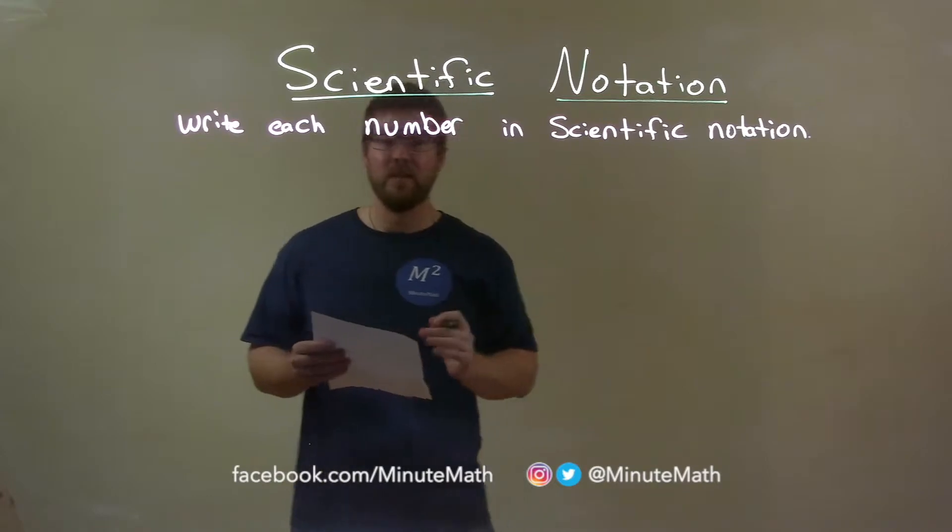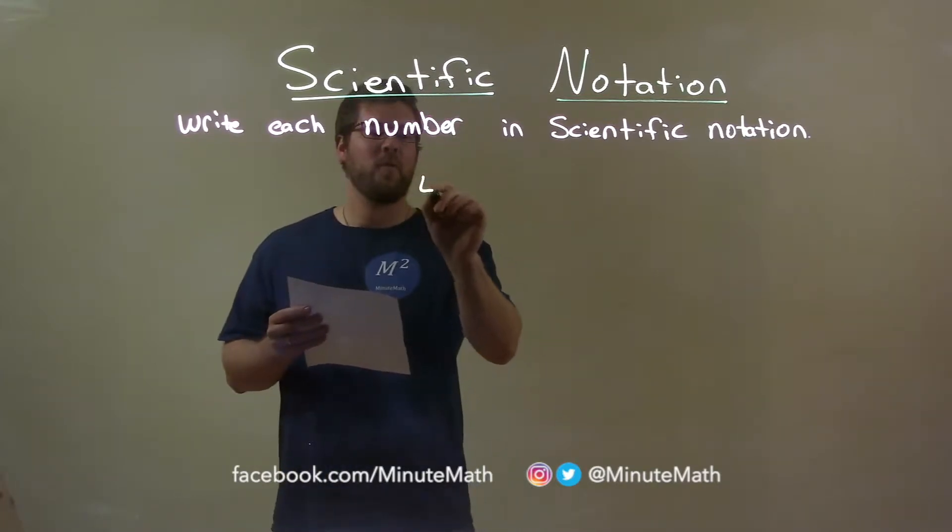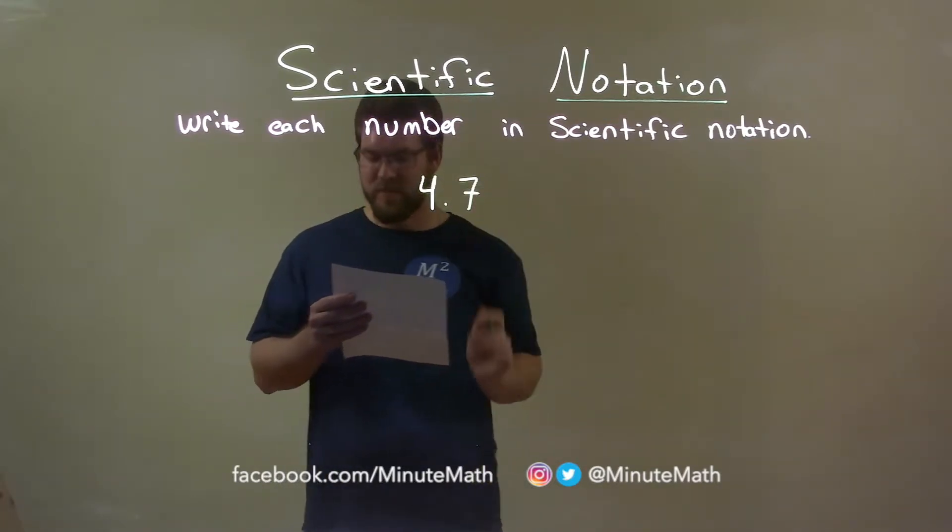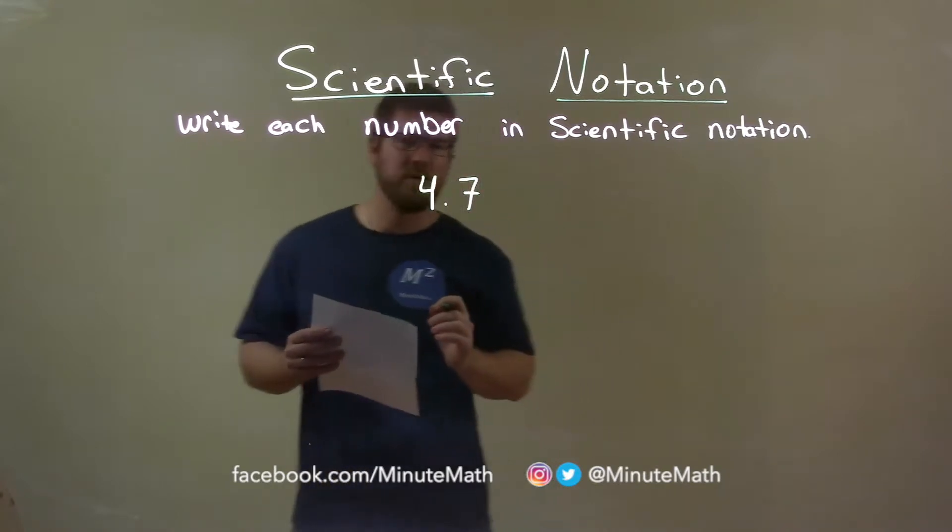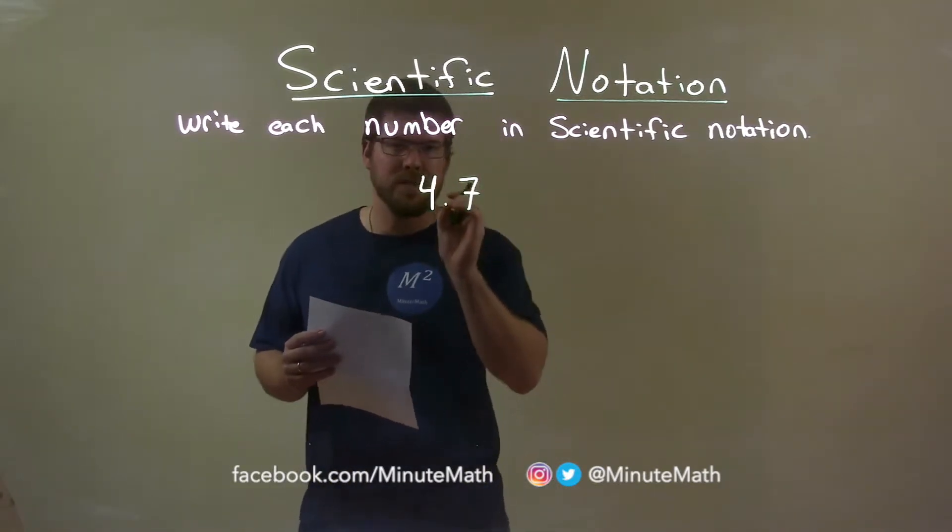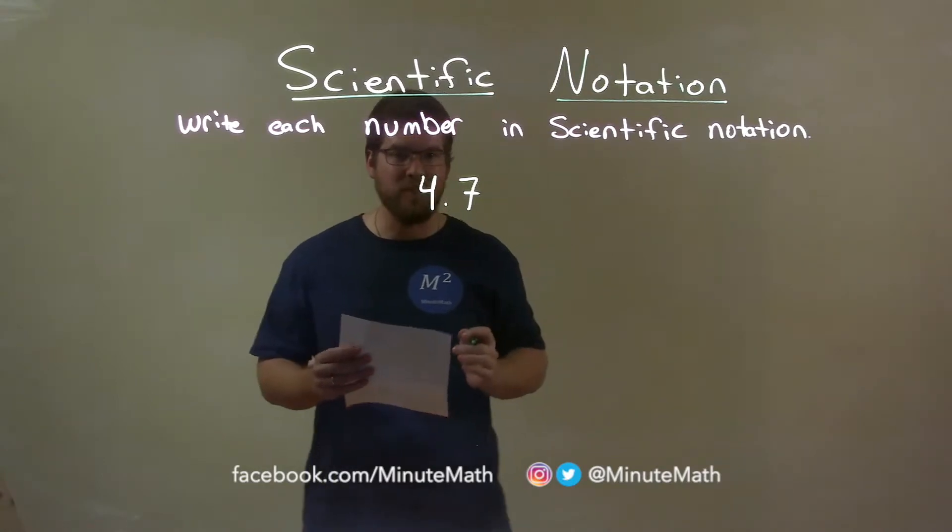So, if I was given this number, 4.7, well scientific notation says we want our first number to be in the ones position and the rest becomes a decimal.